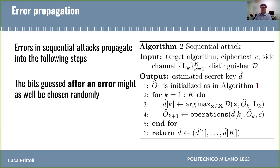A consequence of this sequential structure is error propagation, which means that when a reconstructed key value is wrong, all the following guesses will not be reliable. This is due to the fact that the reconstructed key value is used to compute the intermediate result. So if the key guess is wrong, also the intermediate value will be wrong. But this wrong result will then be used in the following step to reconstruct the following key bit, so the following guess will not be reliable because it will be based on wrong assumptions, and so on for all the following guesses.